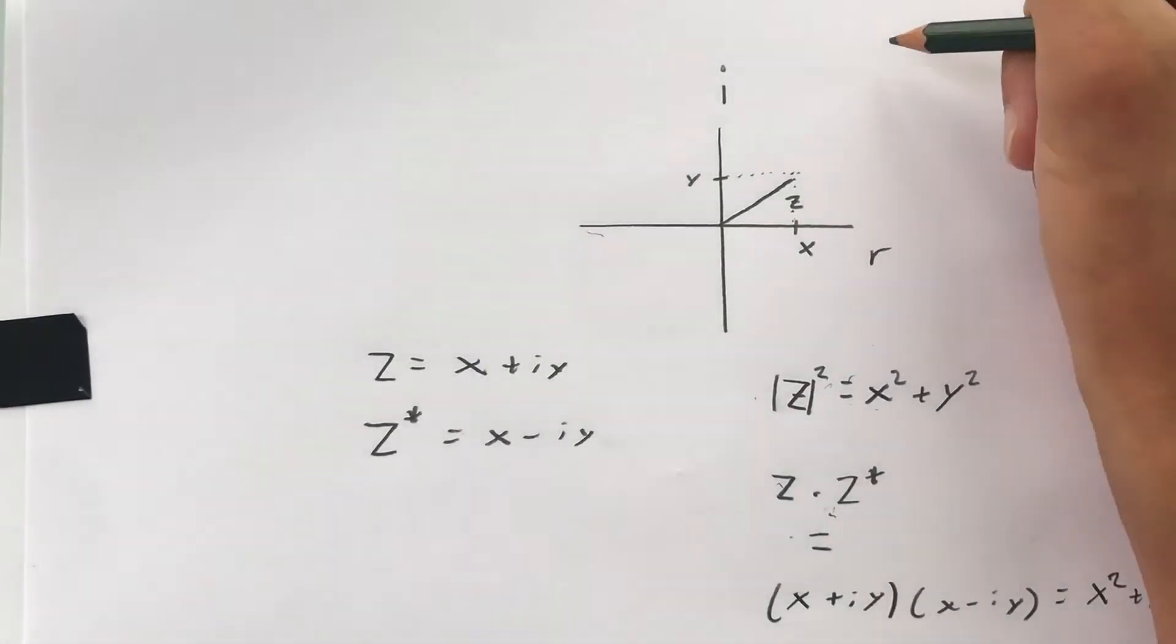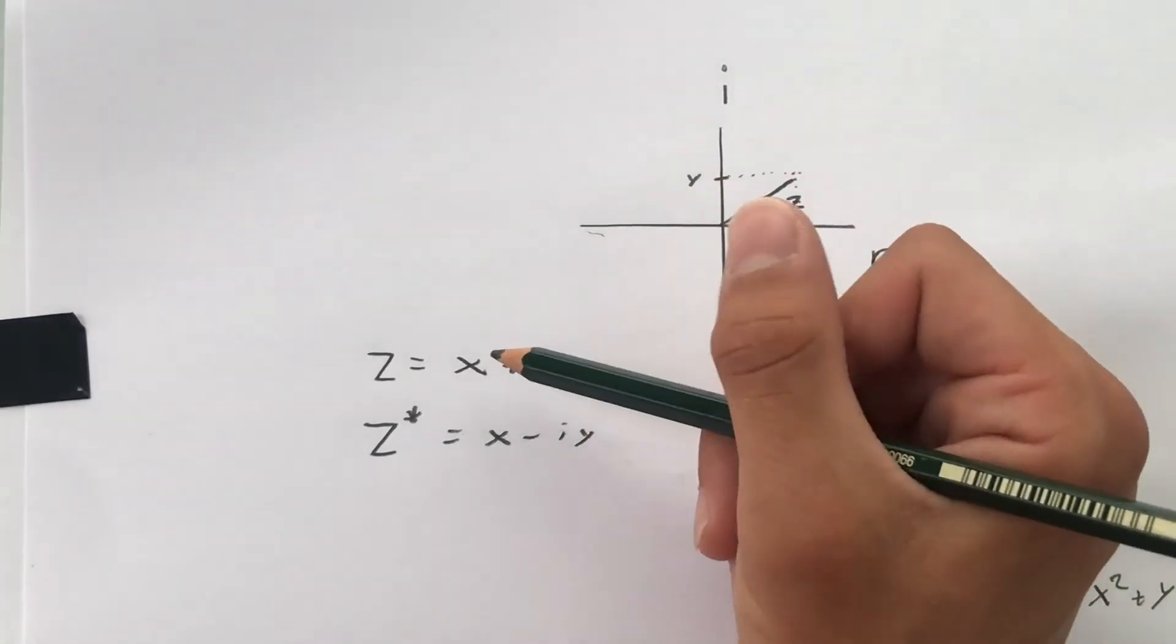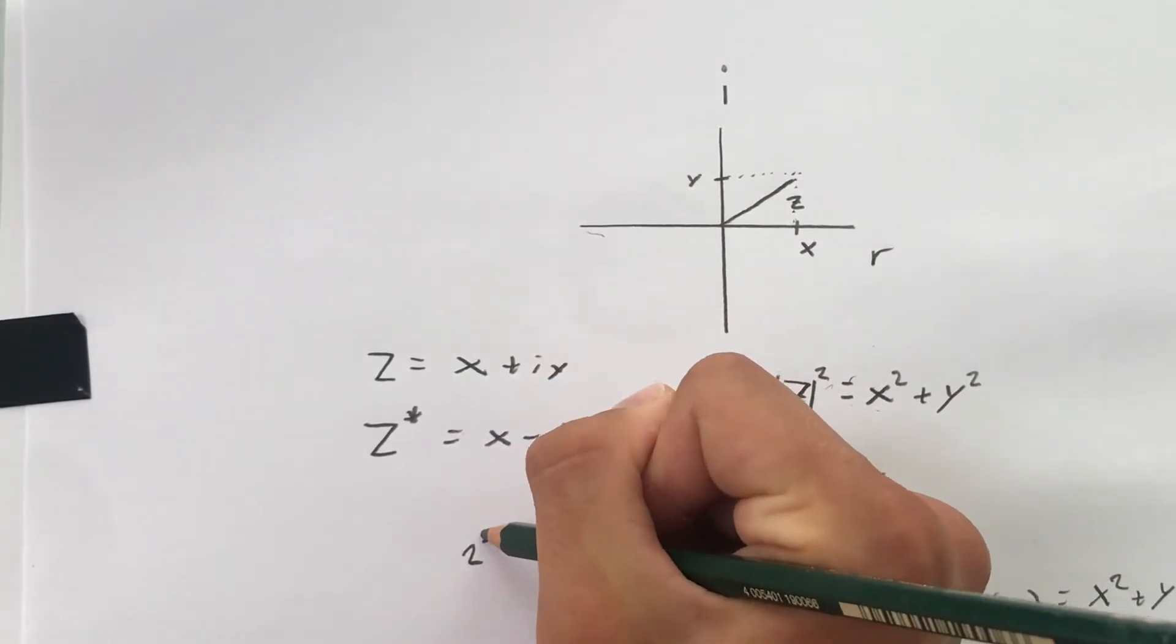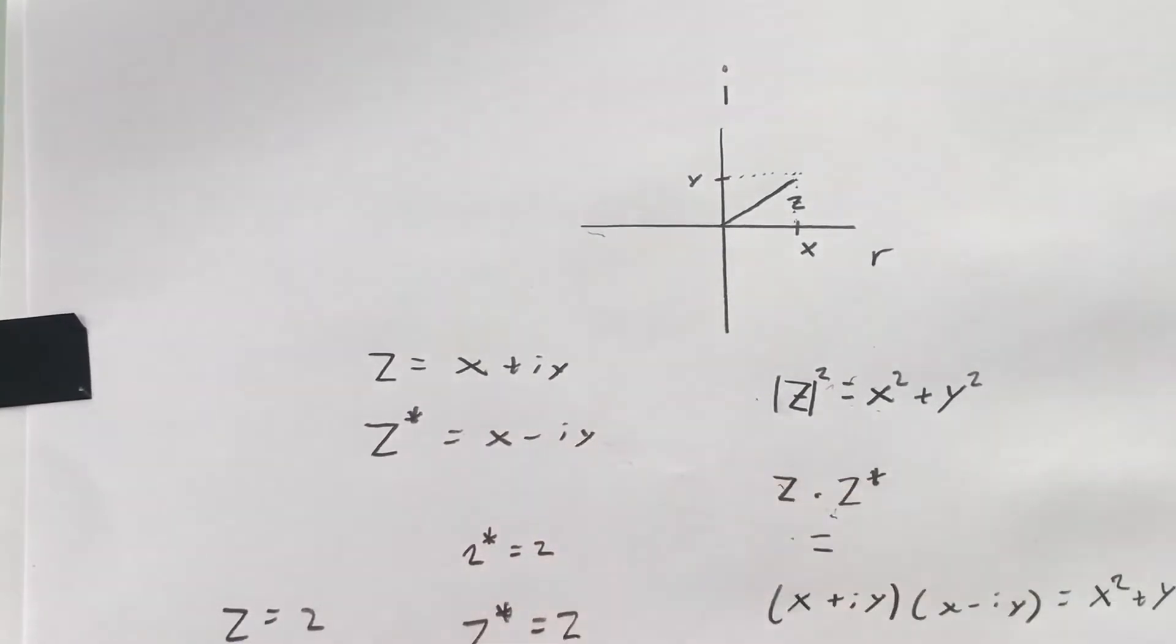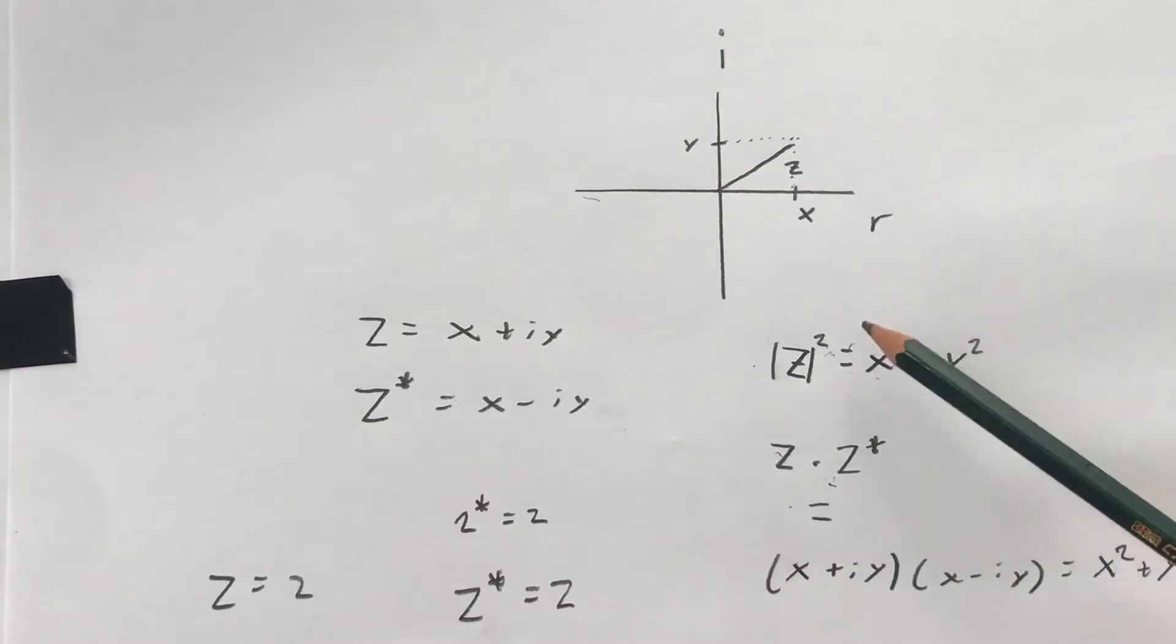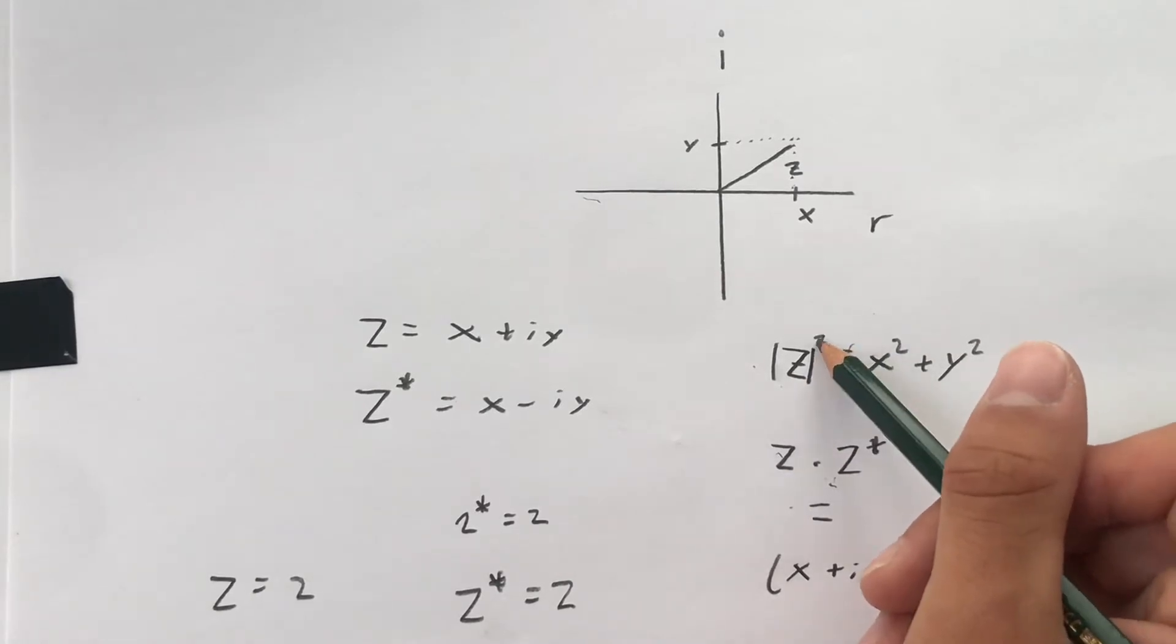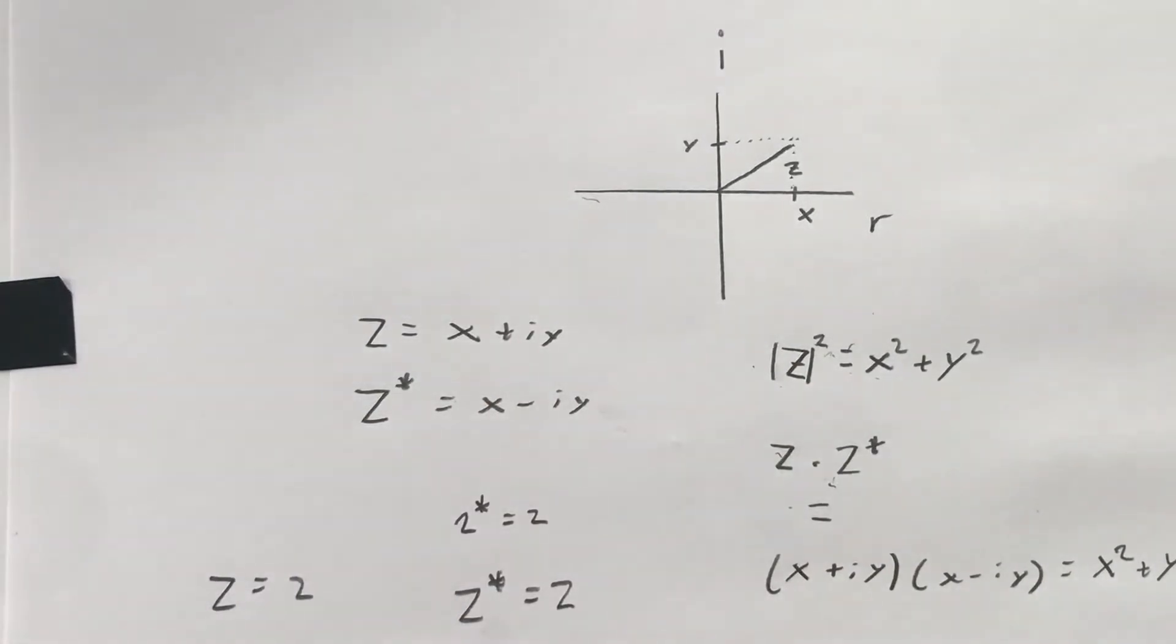The other thing is, if you complex conjugate a real number, you will only be left with that number, because in order for the complex conjugation to work, that number needs to be complex. So if you have only two and you complex conjugate it, that's simply just two. If z equals just two, then the complex conjugation of z is also two. So that is another very important lesson. This concept that z squared is the same as the complex conjugate multiplied by itself is very important in a future lesson.